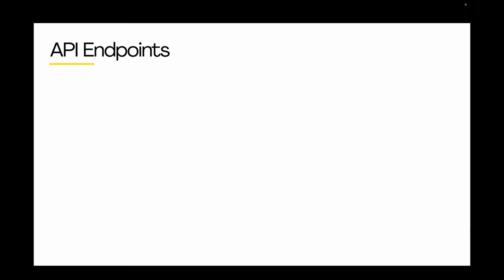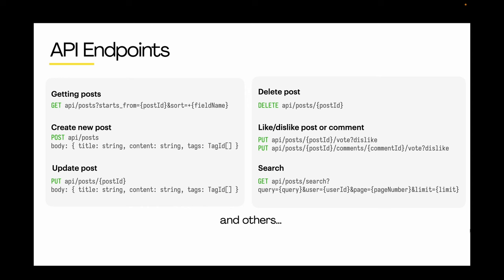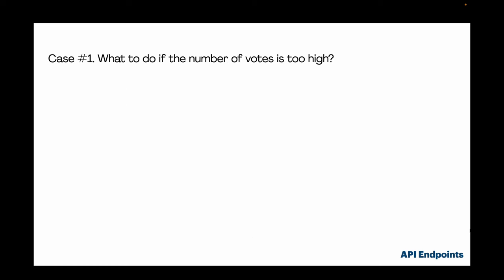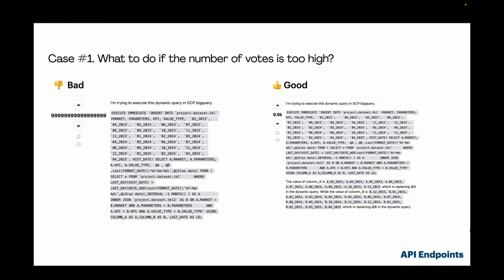The next topic is API endpoints. We will not describe all API endpoints during an interview, but we'll look at some to provide a basic vision of how to construct them. We will use plus and minus signs to indicate the order of sorting for posts. One user interface case: if the number of votes for a post is too large, a bad solution is to display it as-is, disrupting the layout. A better approach is to use abbreviated names for large numbers, such as 4K and 4KK.